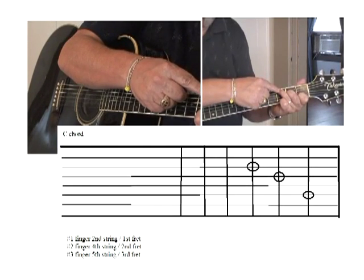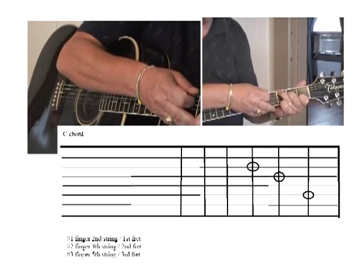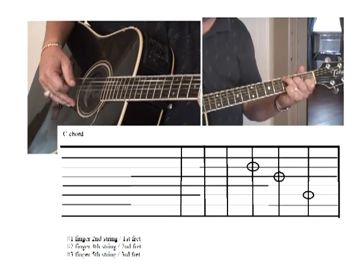the number three finger is going to muffle the fifth string, so it won't really make no unsightly notes that you don't want.